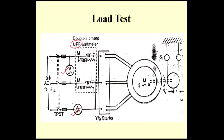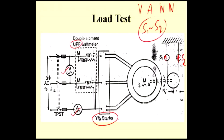This is the loading arrangement. During the load test, first you have to start the motor — a star-delta starter or any starter can be used. Then start at no load. In the laboratory arrangement, we have the brake drum arrangement. At the time of starting, the S1 and S2 values will be zero. During no-load, you have to take the voltmeter reading, ammeter reading, wattmeter reading, speed, and the difference between S1 and S2.